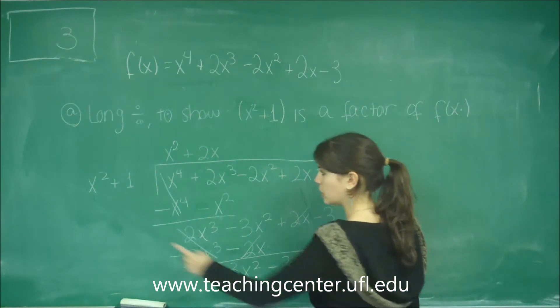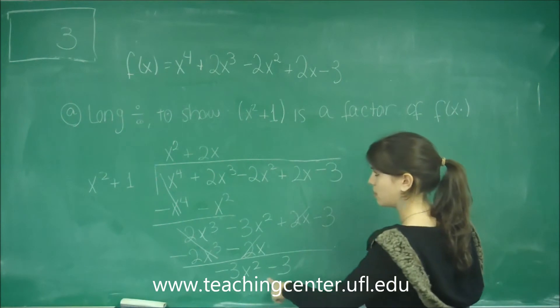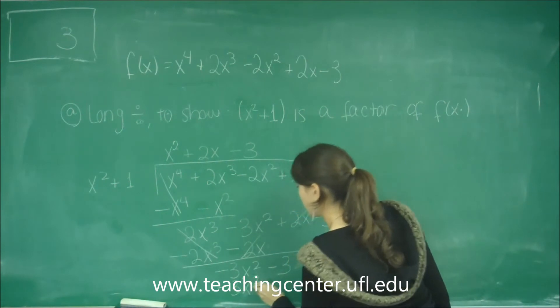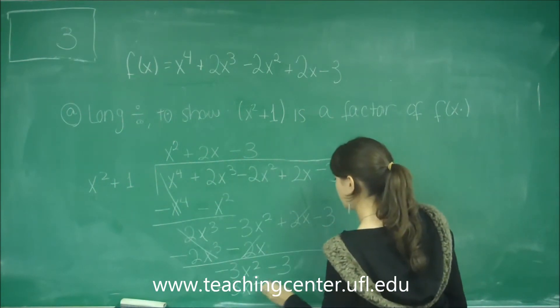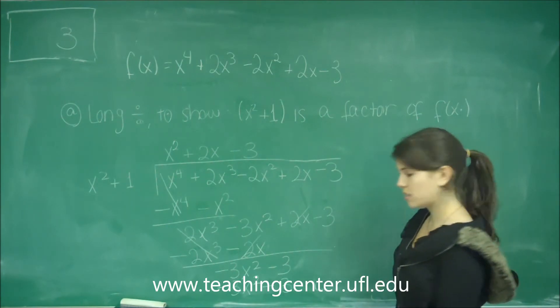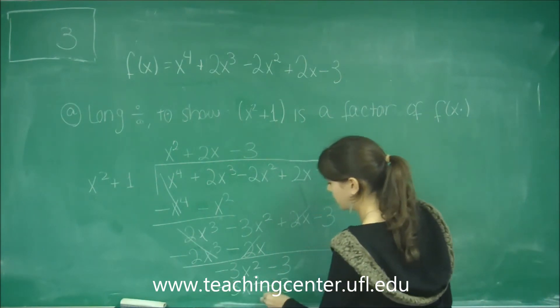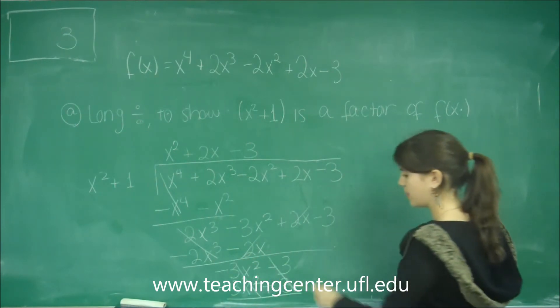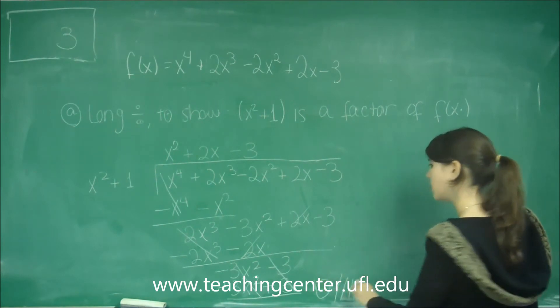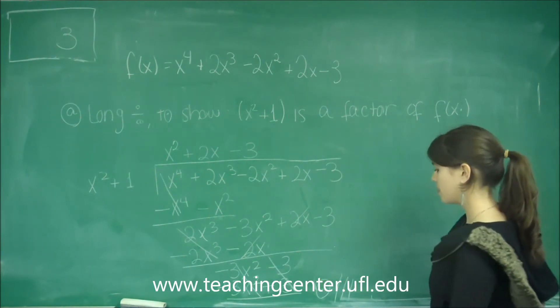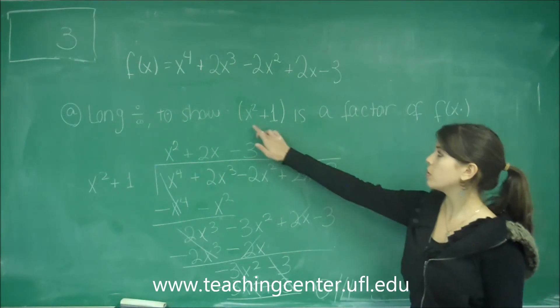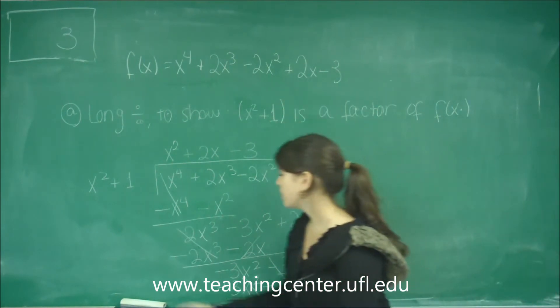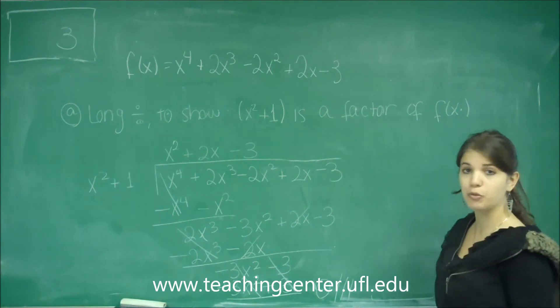Now, what do we need to multiply to x squared to get negative 3x squared? Just a negative 3. So then we bring down a negative 3x squared. Negative 3 times 1 is negative 3, and then we want to minus it. So when we minus it, we distribute the negative sign. And then we get these two to cancel out, these two to cancel out, and we get our remainder of 0. So that means this remainder is proof that x squared plus 1 is a factor of f of x. And that is the answer to part A.